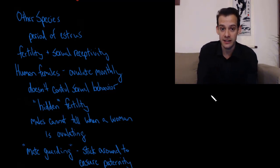Now human females do not have this period of estrus. So human females don't go into heat, they don't have estrus, but they do have a cycle of fertility. They ovulate on a monthly basis. And it's important to note that this ovulation doesn't control their sexual behavior the way the estrus does in other species. So human females can engage in sexual behavior at any point during their cycle, regardless of whether they're fertile or not at that time.